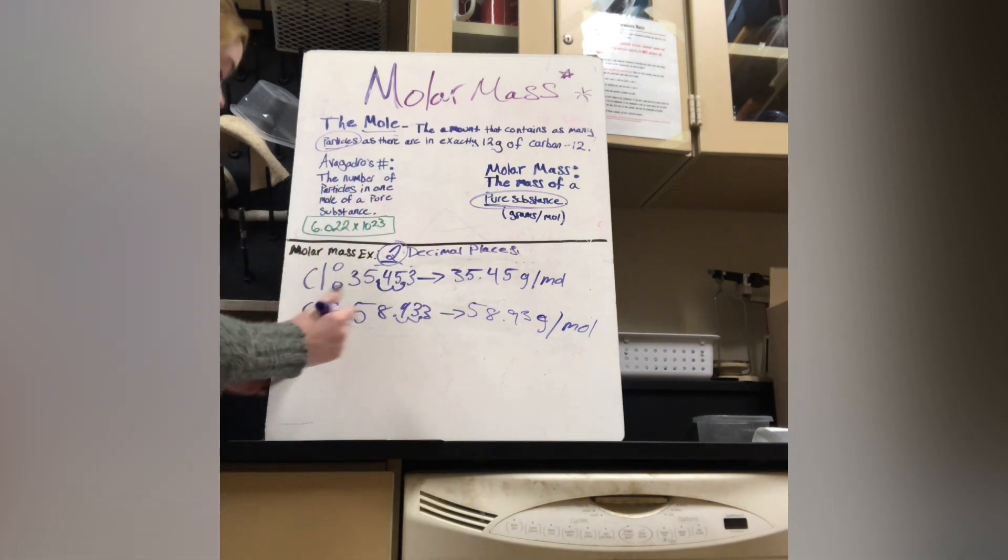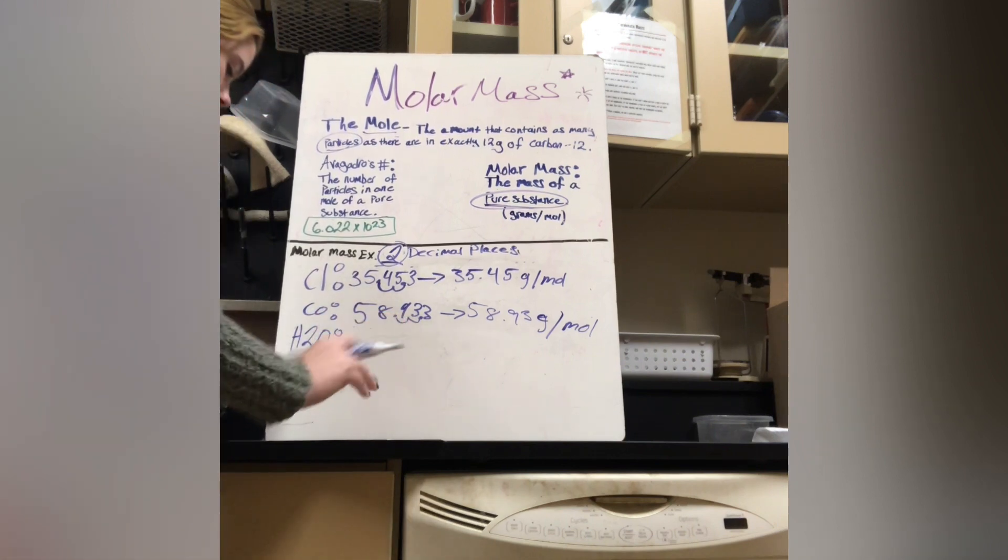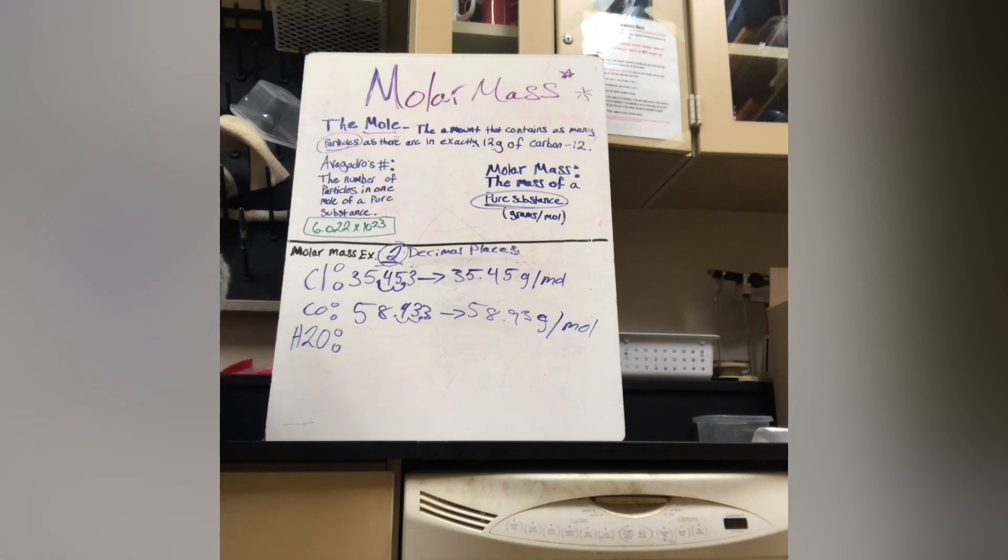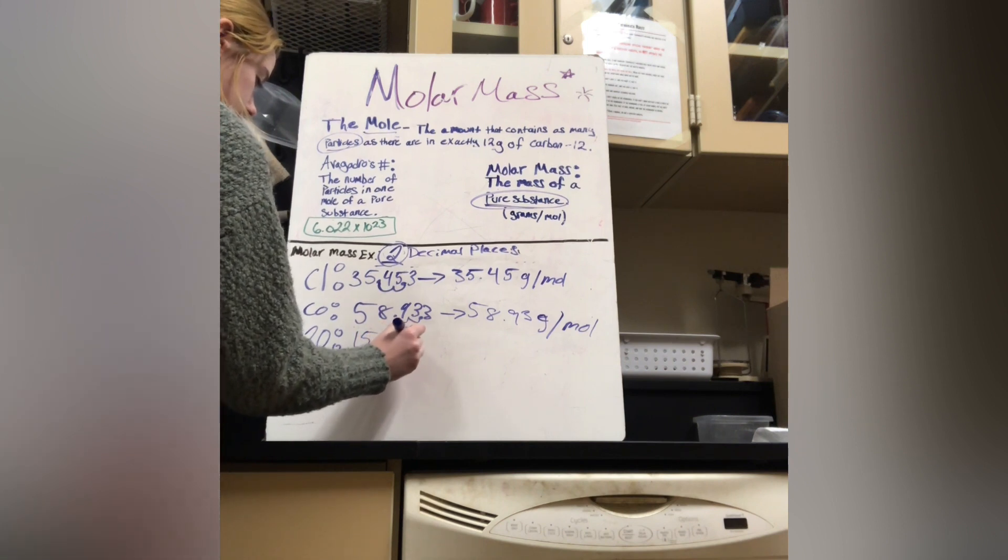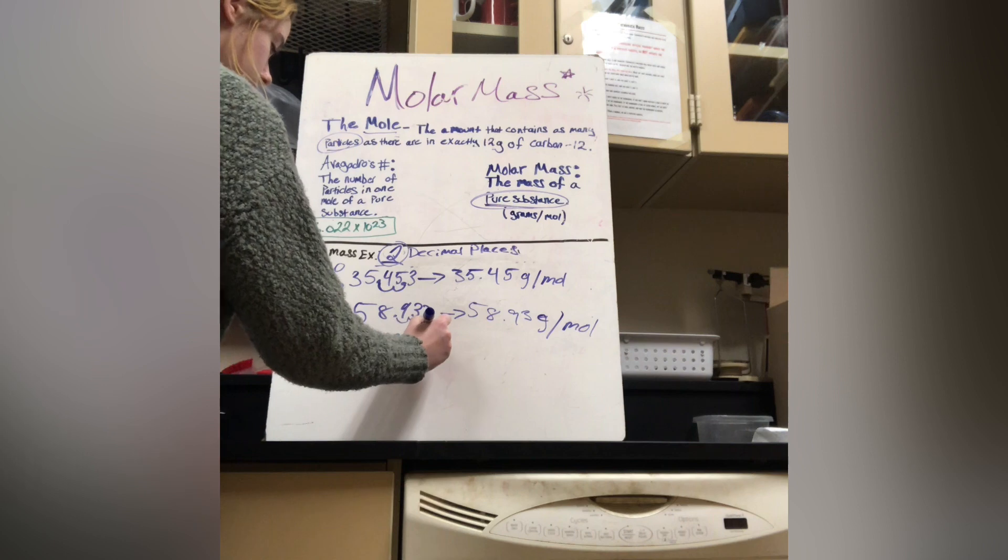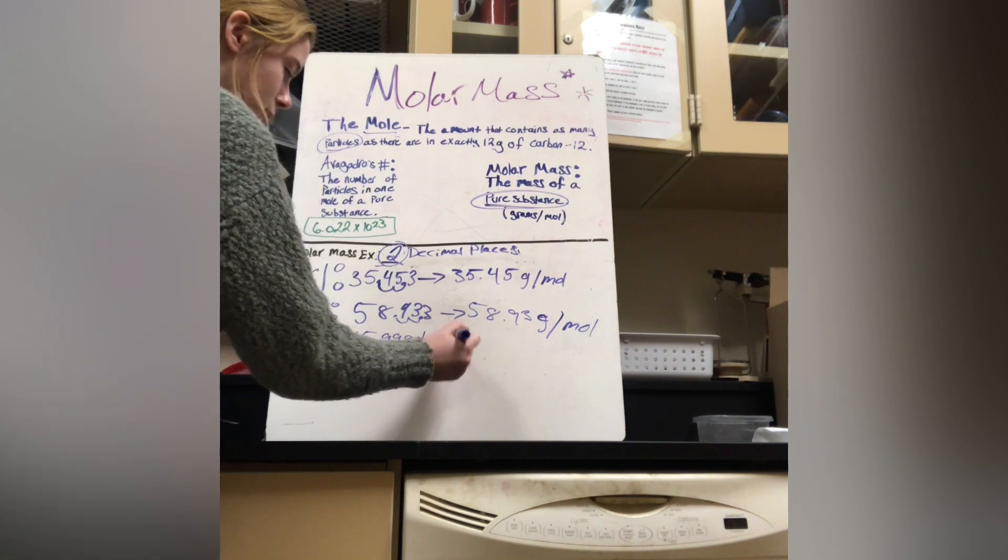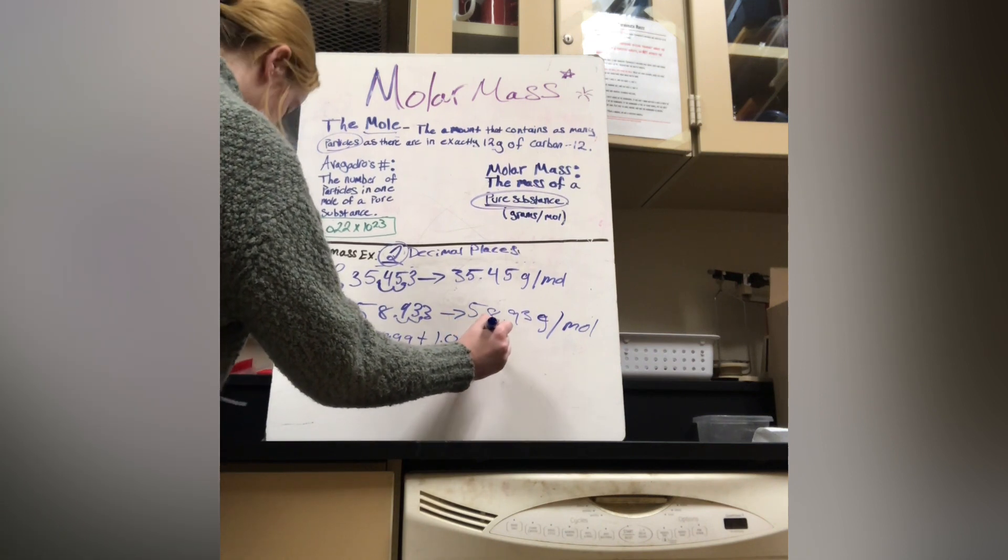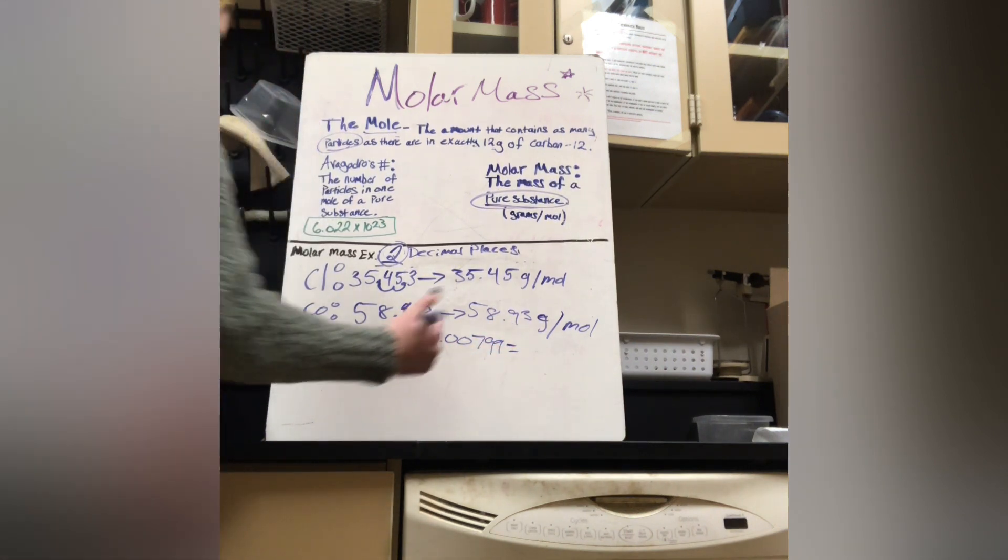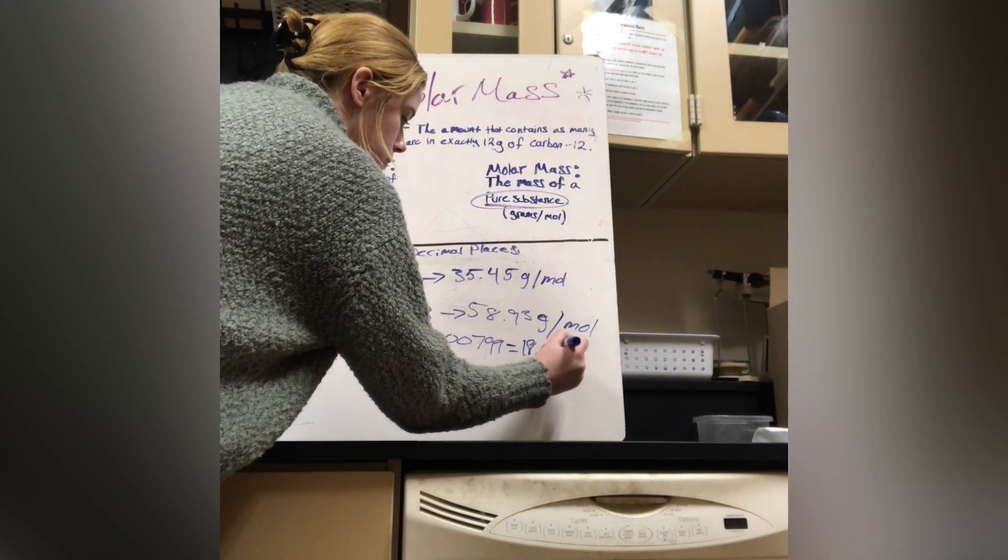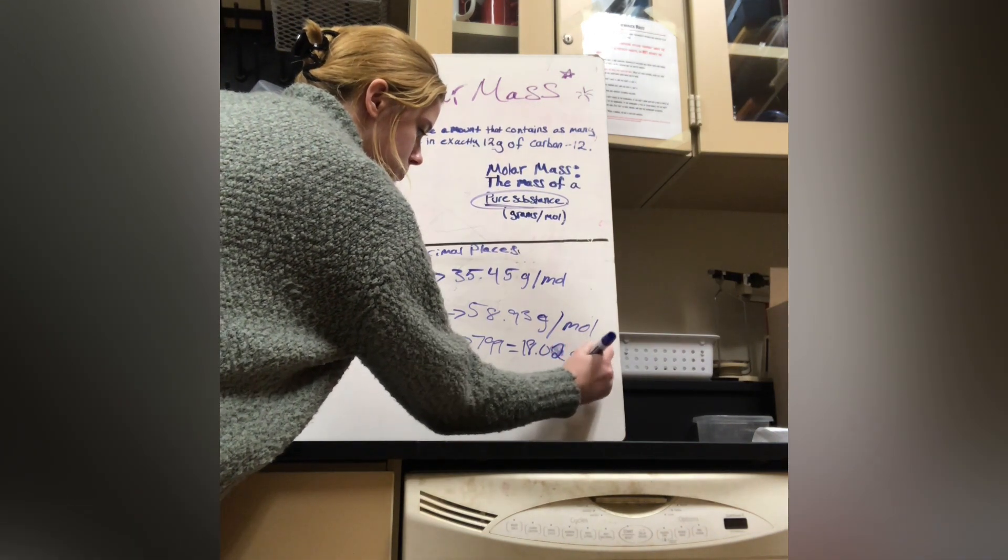And then, this one's a little harder. So then we have water, H2O. So then we would find oxygen, which is 15.999. We do not carry the decimal. And you would add that to hydrogen, which is 1.00799. Okay? And that would equal 18.02 grams per mole.